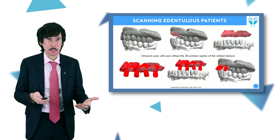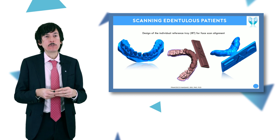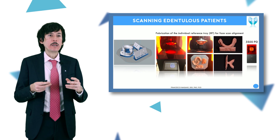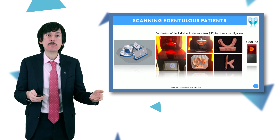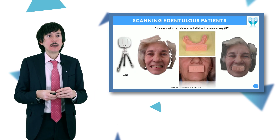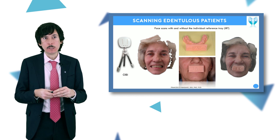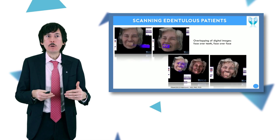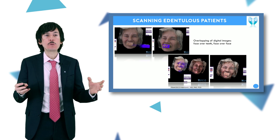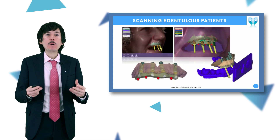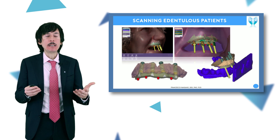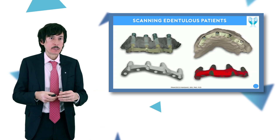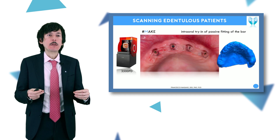We can also add information of the face of the patient using a reference tray for the face scanner — we can print it with a 3D printer. It is an individual reference designed in Meshmixer. We use the Obis Scanner, a powerful face scanner for dentistry, to capture two scans of the patient with and without the reference. We can send all this information to the dental technician, who superimposes the different files and can model the final bar for the overdenture, having all available information including all files in 3D.